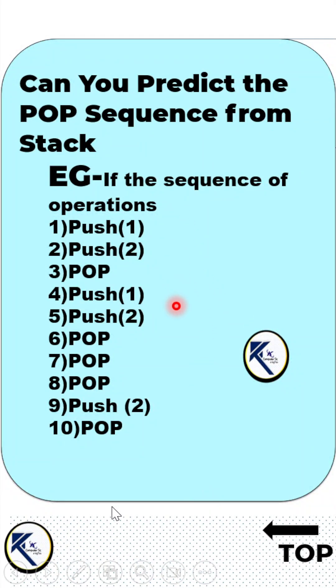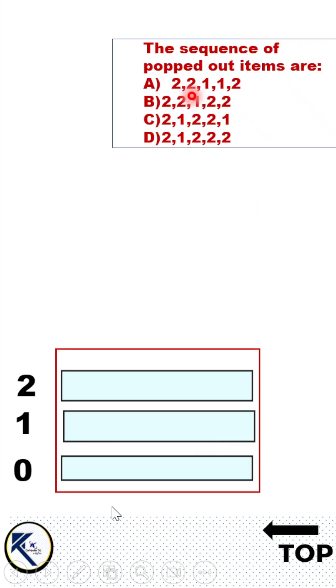We are given a sequence of push and pop operations in a stack. Can you correctly identify the sequence of items that will be popped out from the stack or removed from the stack?